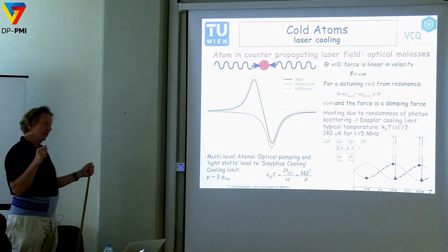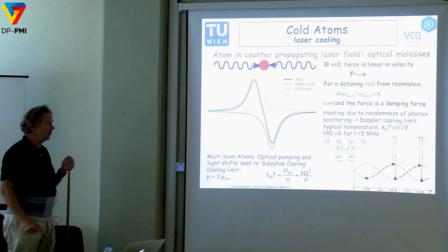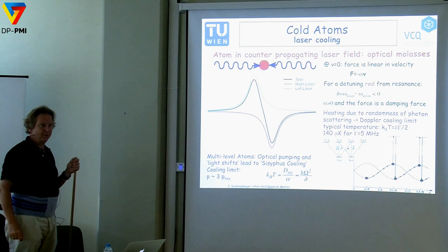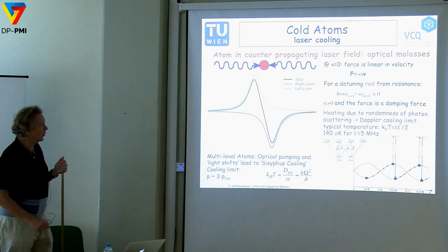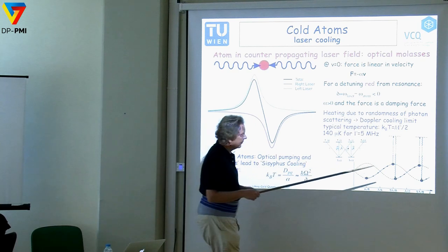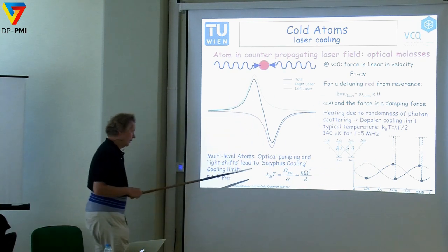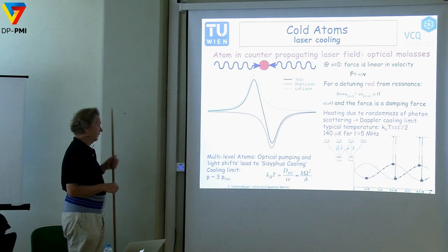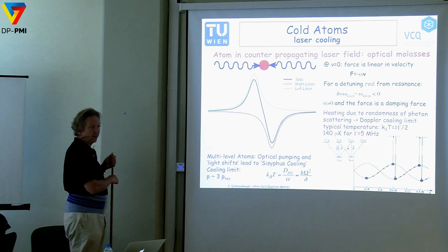The amazing thing is: you take an atom, shine laser light in two directions, and these things cool down to amazingly cold temperatures just for free. If atoms have many different levels rather than just two, there are other processes that get you even colder — to microkelvin — also basically for free.